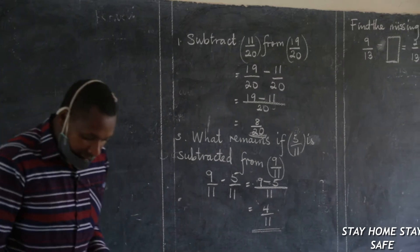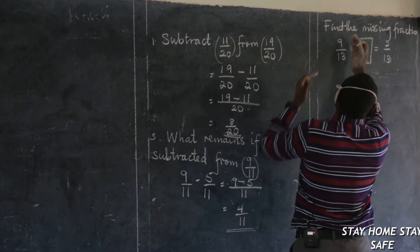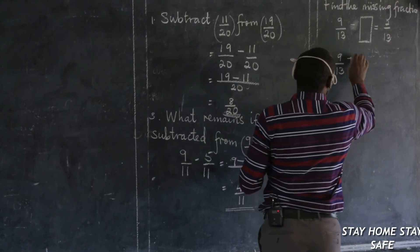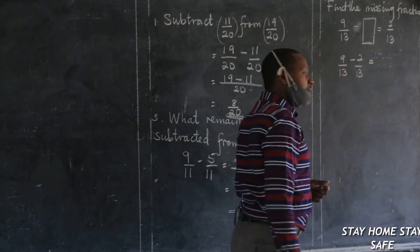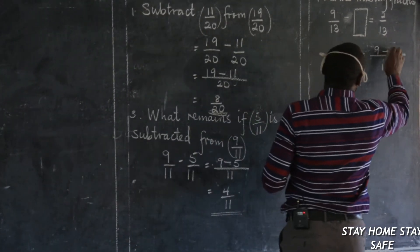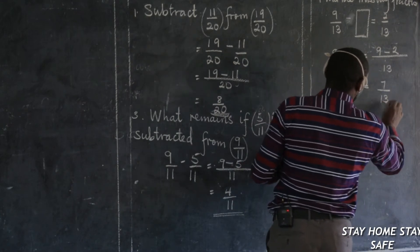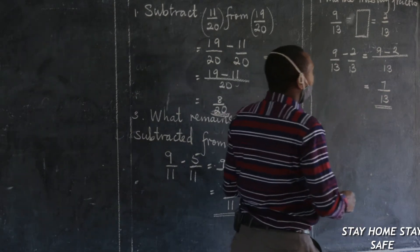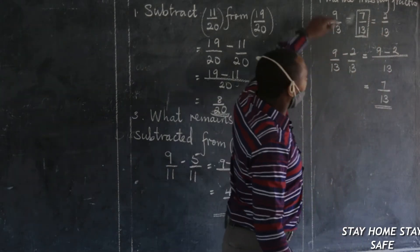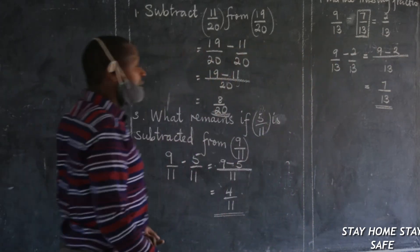We also had the last one saying find the missing fraction to make this statement true. What do you subtract from 9 thirteenths to get 2 thirteenths? This is the same as 9 thirteenths take away 2 thirteenths, and we shall get that missing fraction. Here we said keep the common denominator 13, then subtract the numerators: 9 take away 2. What do you get? 7. And this is 7 thirteenths. So the missing fraction here was 7 thirteenths. Please put it in and see whether it will make sense. Because 9 take away 7, the answer will be 2. Keep just the common denominator and maintain it until you get the answer.